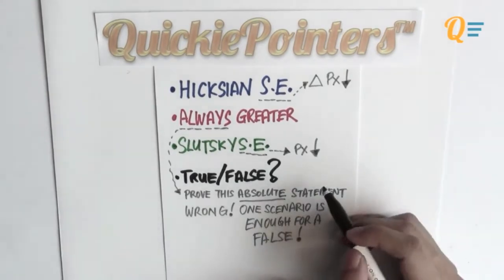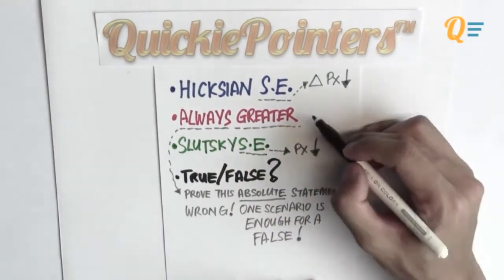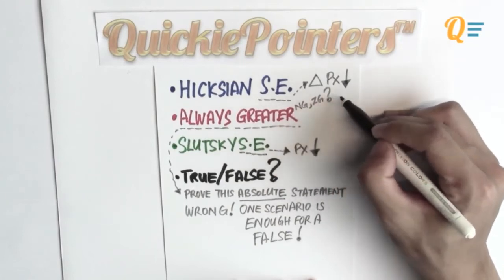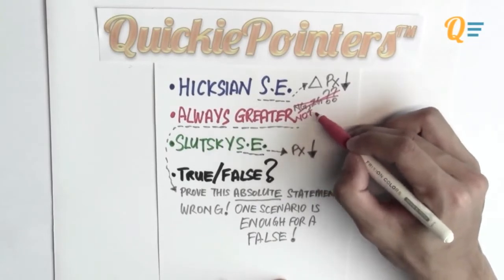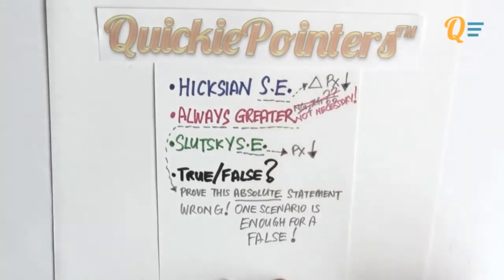Okay, I want to place a bit of emphasis on the second quickie pointer. When we are comparing SEs, do we have to talk about normal good and inferior good or maybe even Giffen good? Well, the answer is you don't necessarily have to bring these things in.